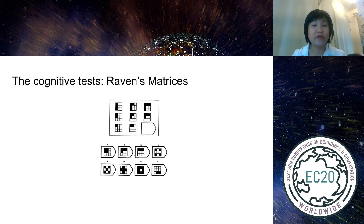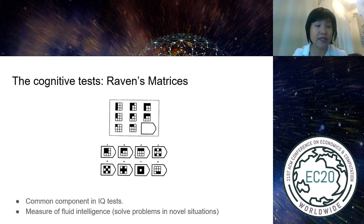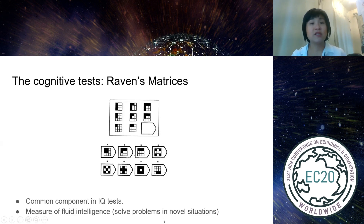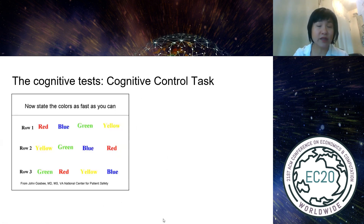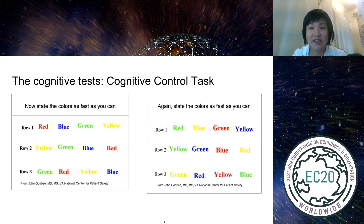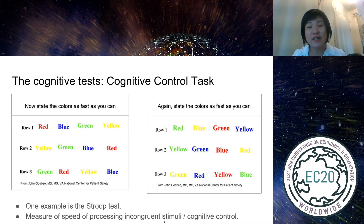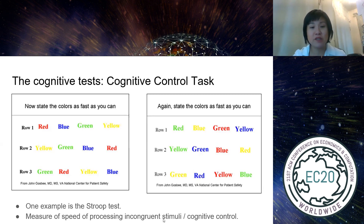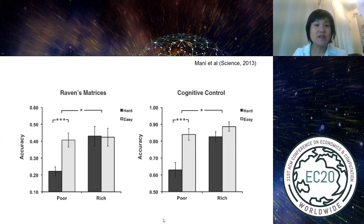The cognitive tests included the Raven's matrix — finding a pattern that fits a sequence, a common IQ component measuring fluid intelligence and problem-solving in novel situations — and a cognitive control test, the Stroop test, where you state ink colors as fast as possible. In the congruent version it's straightforward; in the incongruent version the color and the word differ, making it harder and measuring speed of processing under cognitive conflict.